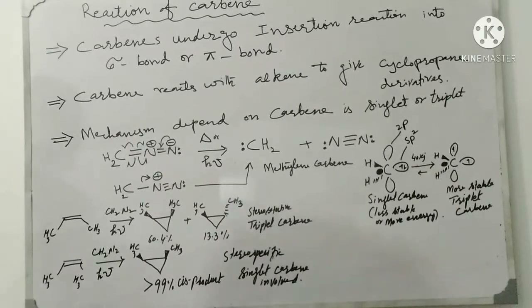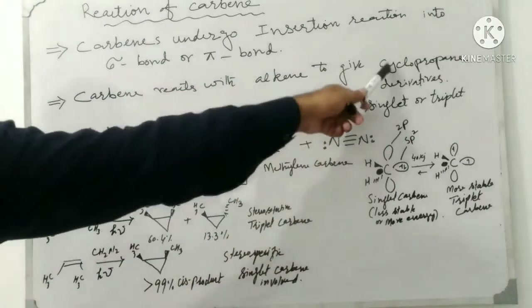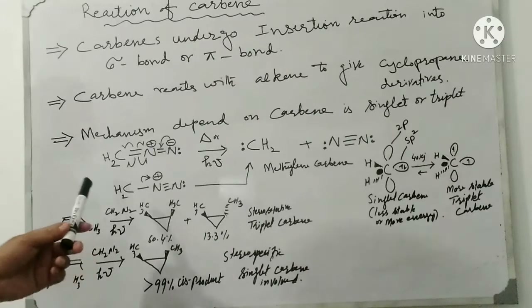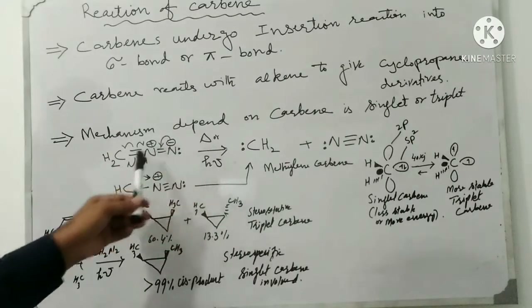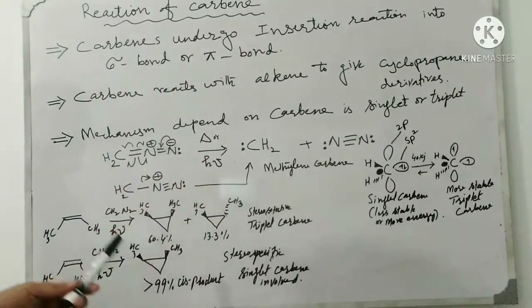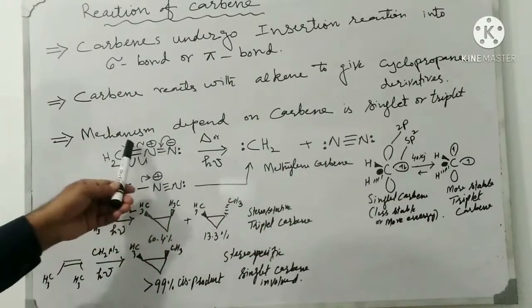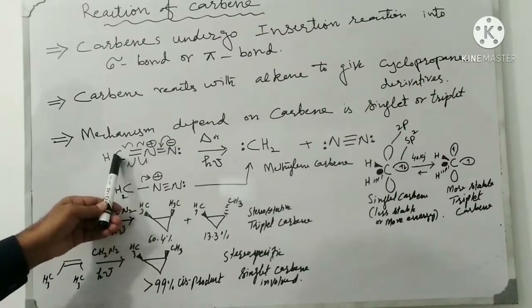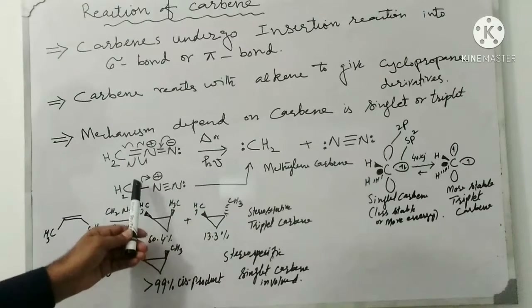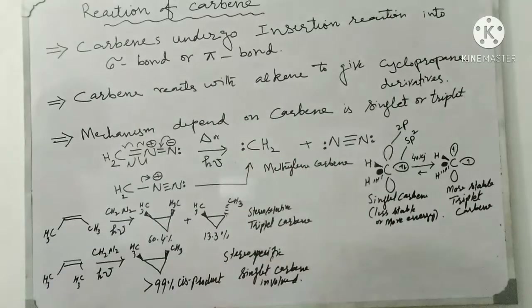Now we discuss another example — the insertion reaction of carbene into a pi bond, forming cyclopropane derivatives. This is diazomethane. When it is thermally or photochemically activated, energy is given and it generates carbene, which is called the simplest carbene — methylene. We can show this as homolytic cleavage, where one electron goes to carbon and one to nitrogen, or heterolytic cleavage of the carbon–nitrogen bond to give methylene carbene, with nitrogen eliminated as a byproduct.